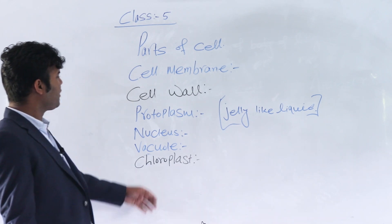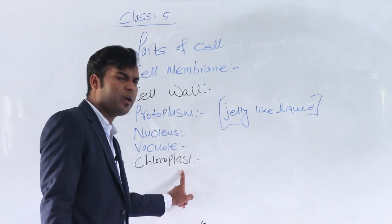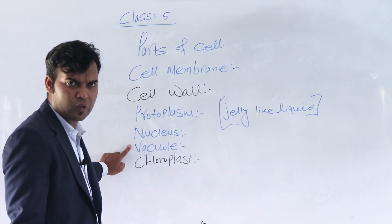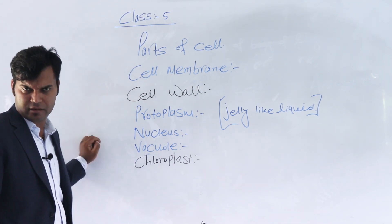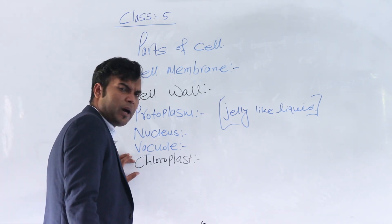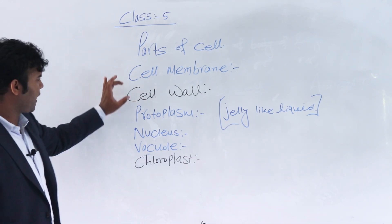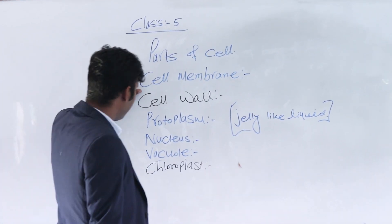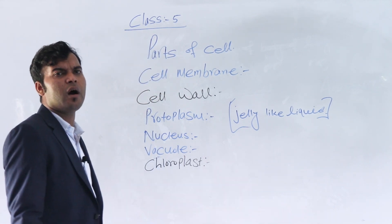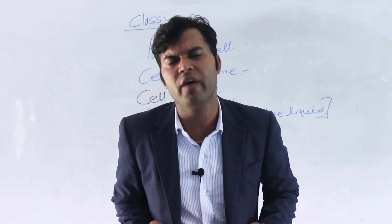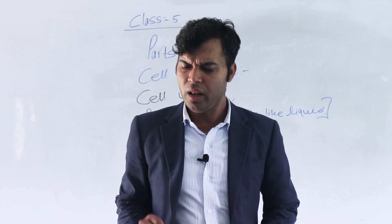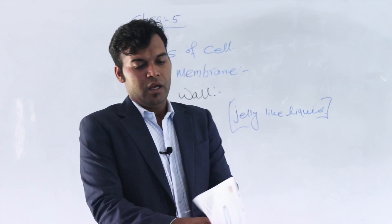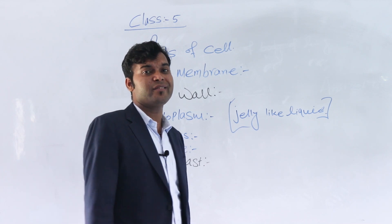I have written cell wall and chloroplast using black color markers, but cell membrane, protoplasm, nucleus, and vacuole are written using another marker. Because cell wall and chloroplast are found only in plant cells, but cell membrane, protoplasm, nucleus, and vacuole are found in both plant cells and animal cells.